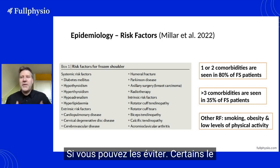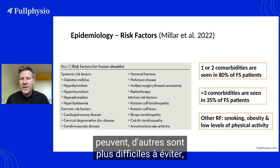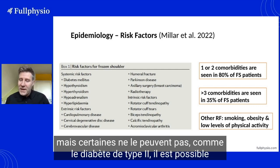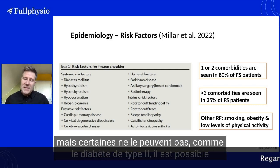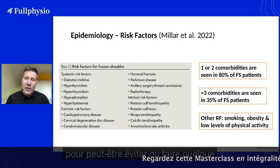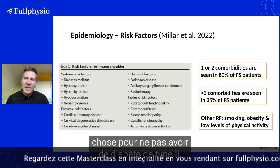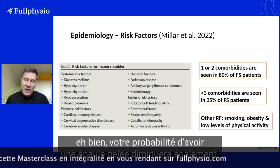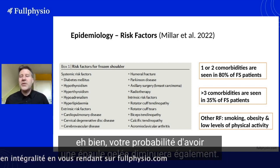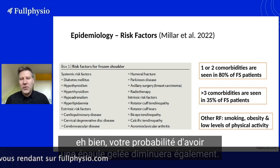In theory, if you can avoid developing these risk factors, you can reduce the likelihood of getting a frozen shoulder. Some risk factors are more difficult to avoid than others, but for something like type 2 diabetes, it is possible to take preventive action — and if you reduce your likelihood of developing type 2 diabetes, your likelihood of getting a frozen shoulder will also decrease.